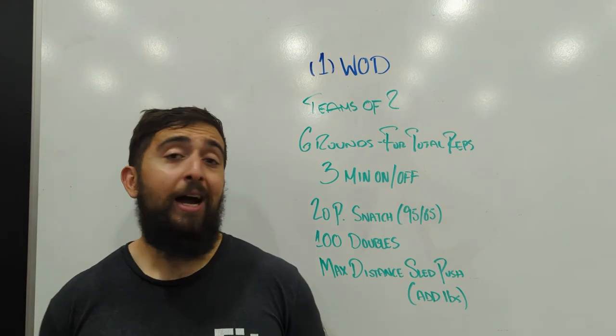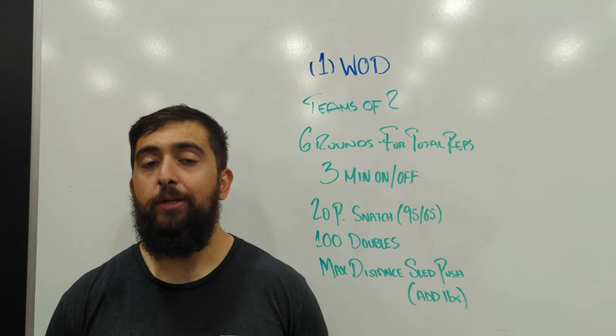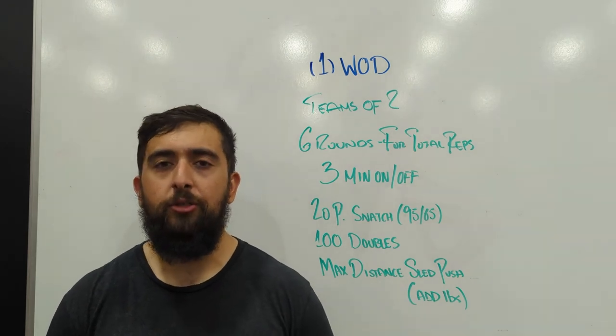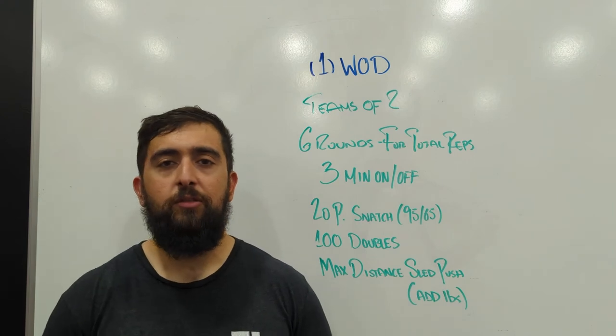Then from there, you're going to add a 45 pound weight on top before you start the next round. So each round, it's going to get a little bit more challenging to push that sled. But again, you're aiming to get as much distance covered as possible.